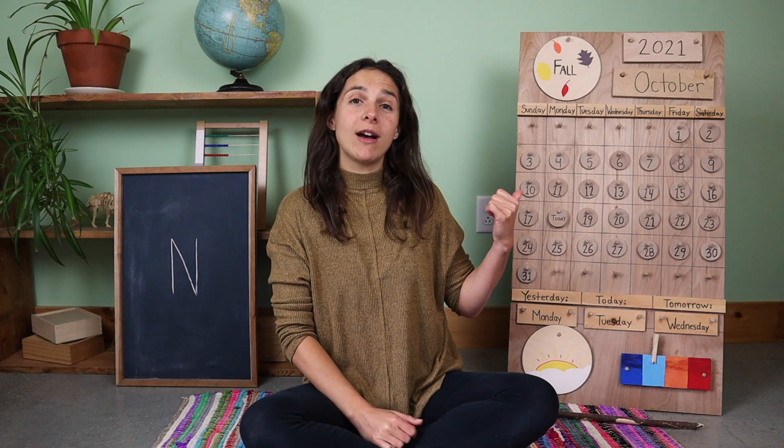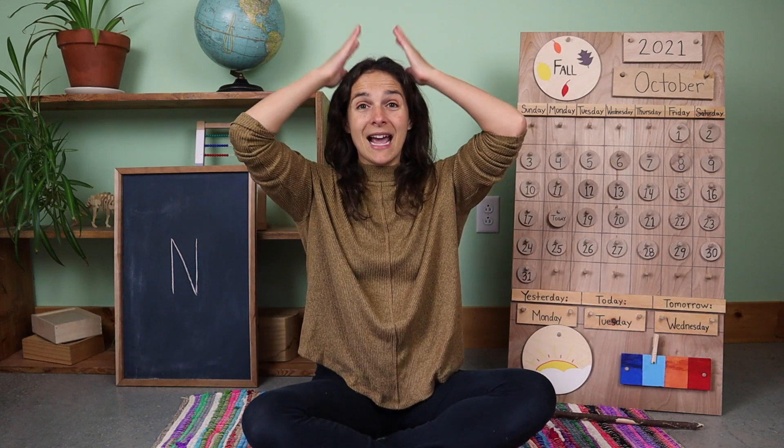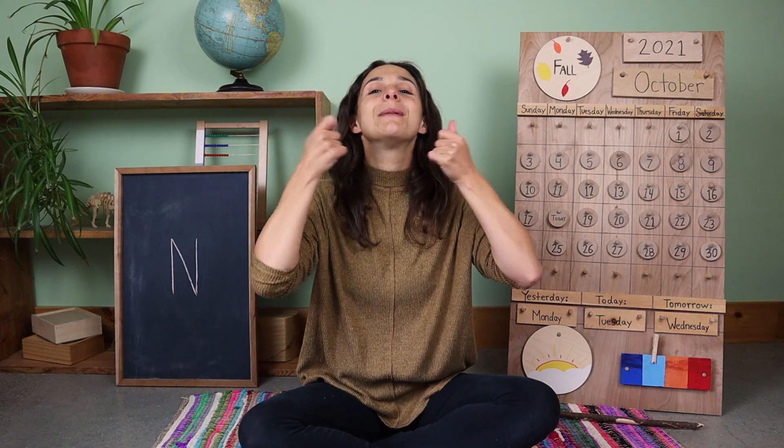Good morning, friends, and welcome to circle time. I hope that you're having a great day so far. We have three things that we need to do before we move on to the calendar and weather chart. Number one, let's turn on our listening ears. Next, we have to put on our thinking hats. Today, my thinking hat has a ribbon underneath my chin, so I'm going to tie it up into a bow. And the last thing that we need to do is warm up our hearts.